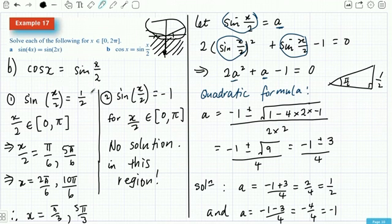So, all we're left with is the solutions from this part, from the first case that we considered. So that means that for our question here, cos(x) equals sine of x over 2, we only have 2 solutions, pi over 3 and 5 pi over 3.